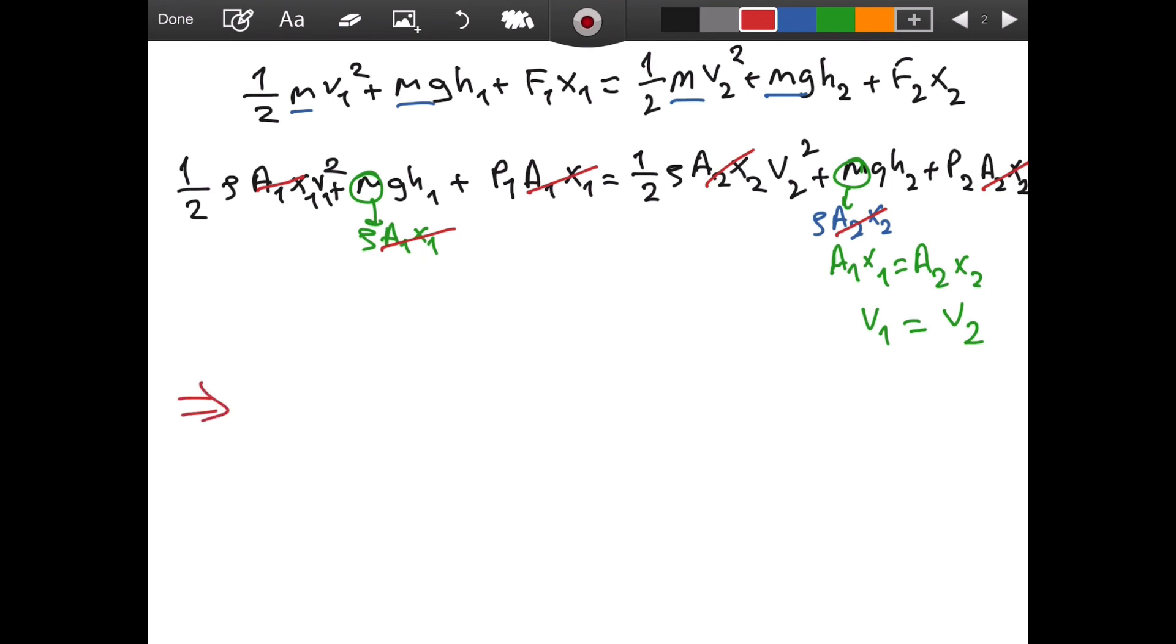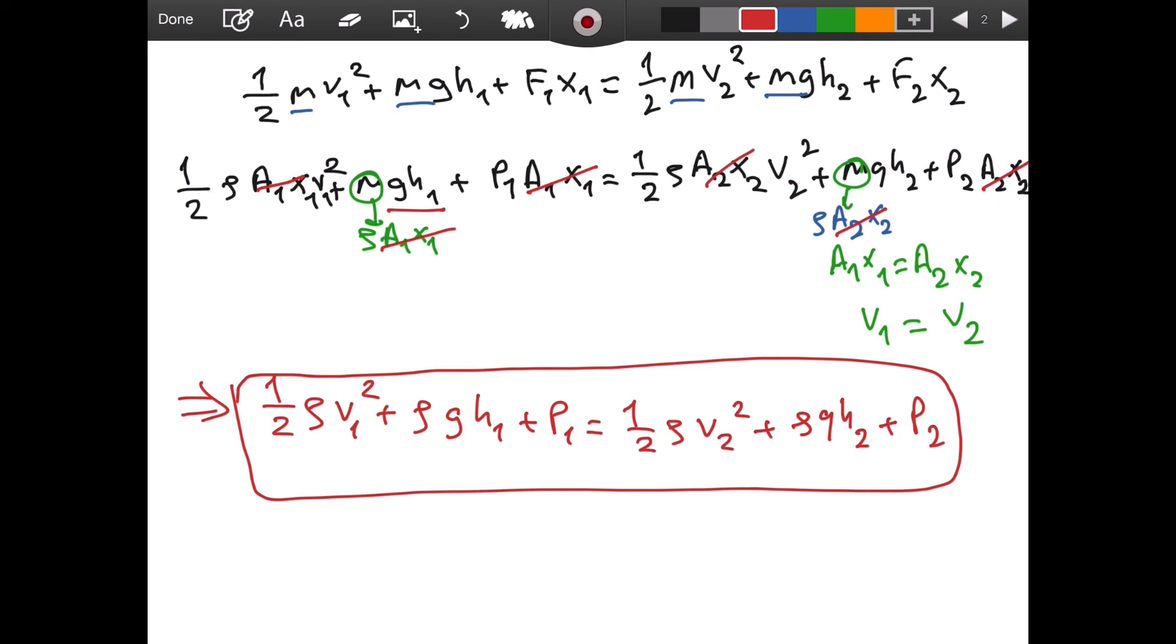And then what do we get is the final result: we get 1/2 ρ v1² plus—we have gh1 here and remember the ρ here I wrote it on the new line because I forgot to substitute for m—we have ρ gh1 plus the pressure p1 is equal to 1/2 ρ v2² + ρ gh2 + p2. And this is actually Bernoulli's equation. This is a very powerful equation. This can help you to find solutions to a lot of problems in real life and I will actually do a couple of problems in the next videos about this. So this is it, we just use conservation of energy to derive Bernoulli's equation which is central to fluid dynamics. If you have any questions please write them in the comments section. I hope to see you in another video. Until then, take care.